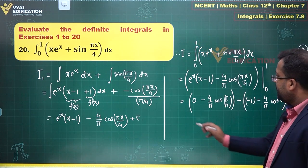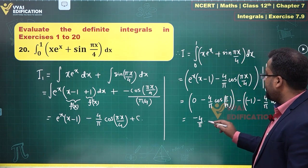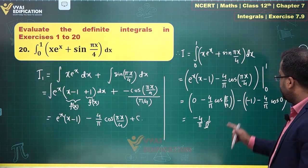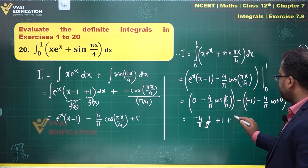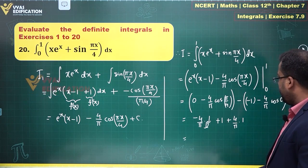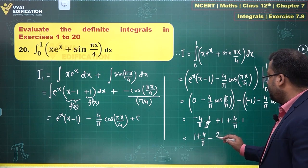This is -4/π times cos(π/4) which is 1/√2. This is what you have. And minus times -1 becomes +1, minus times minus becomes +4/π, cos(0) is 1. So overall this value becomes 1 + 4/π - 2√2.